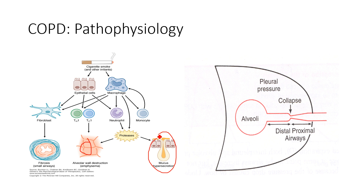With COPD, we see collapse and compression of the small airways, especially during expiration when pressures are going to be the highest. Typically our airways have the ability to stay open during expiration, but because the airways are so flimsy, we see a reduction in the flow out of the lungs. Because of fibrosis, the airways become flimsier, weaker, and occasionally filled with mucus.